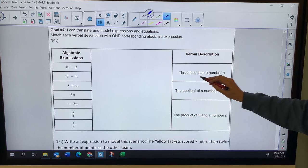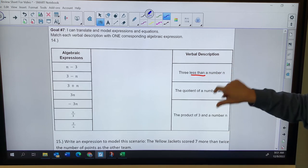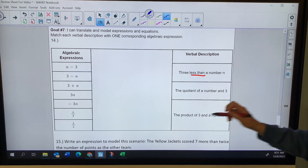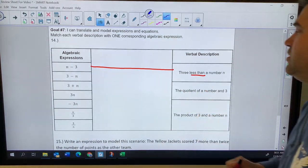Three less than a number N. See that less than. That means I need to have the three at the end. So that top one matches that one.